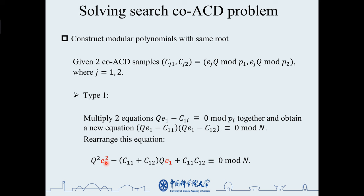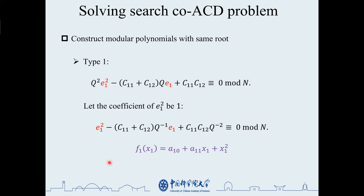The first step is to construct the modular polynomials with the same root. We construct two types of polynomials. In type 1, we multiply two equations together and obtain a new equation where the moduli pi are multiplied to n. Rearranging this equation, we can obtain a modular equation for e1. Like the coefficient of the squared term of e1, b1, we can get a monic polynomial f1.